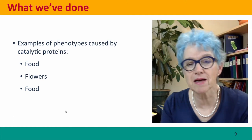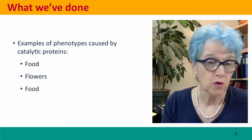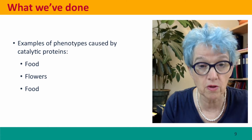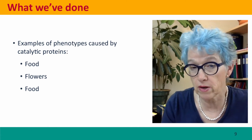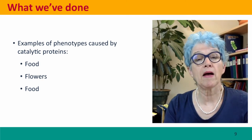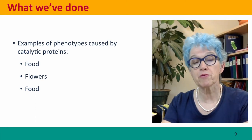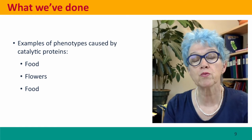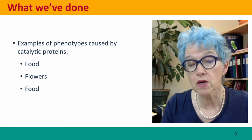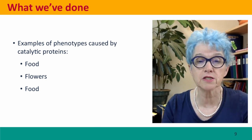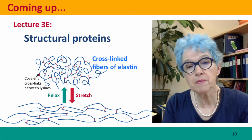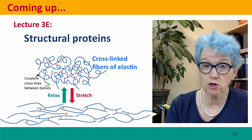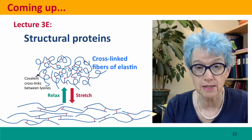So we've looked at examples of phenotypes caused by catalytic proteins. We looked at food — cauliflowers — and at flowers. Then we went back to food, looking at red and yellow peppers. For the first time, we were able to think of these things in terms of the products of pathways, of biochemical steps catalyzed by enzymes that are the products of genes. We started to think about what phenotype is caused when a gene is defective. Coming up next, we're going to switch from catalytic proteins to structural proteins — specifically the skin protein elastin. I hope to see you there.